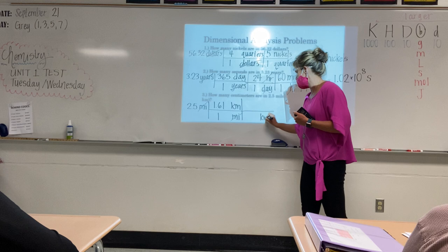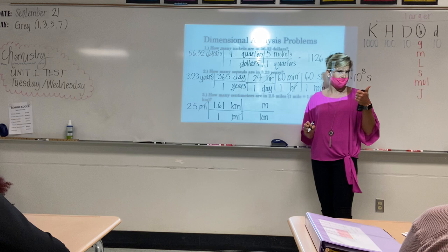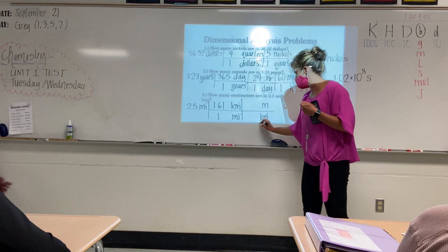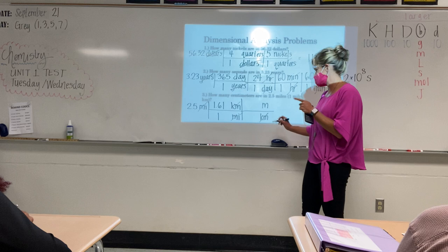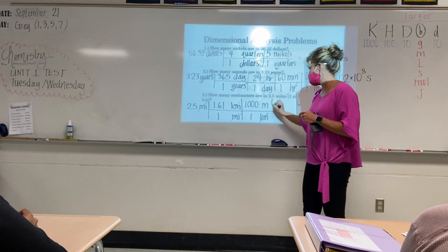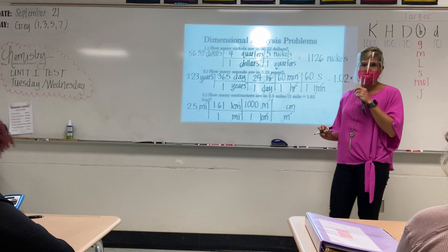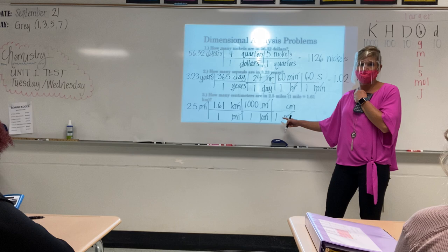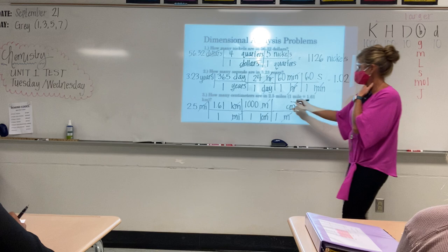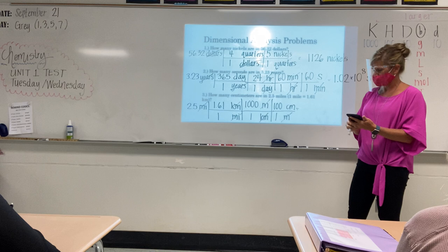Kilometers is going to go on the bottom. What am I going to put on the top? We have to stop at our base — we can't go straight to centimeters yet, so we're going to stop. What's larger? Kilometers. So where's my one go? With kilometers. How many meters are in a kilometer? 1,000. One last step: meters to the bottom, centimeters to the top. Where's my one going to go? On the bottom — meters is bigger, so we put a one with our meter. How many centimeters in a meter? 100.